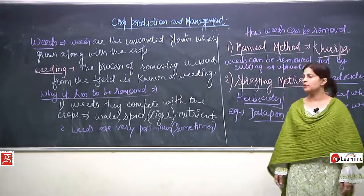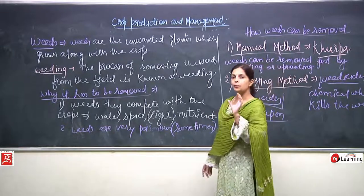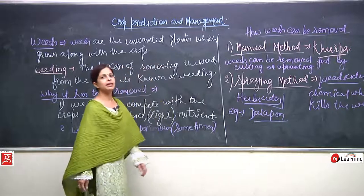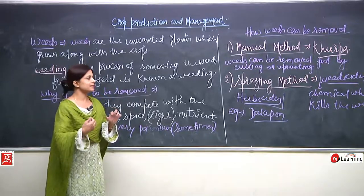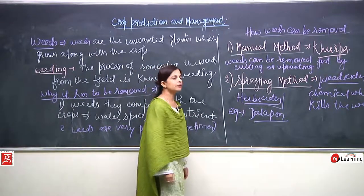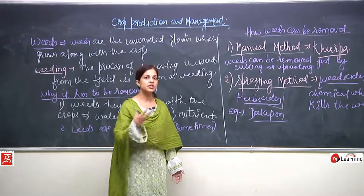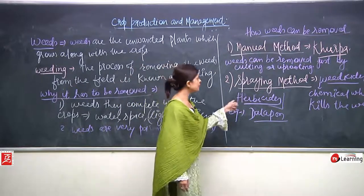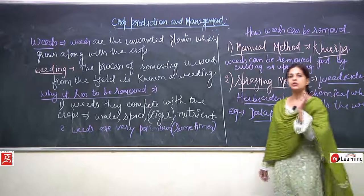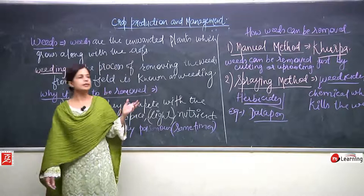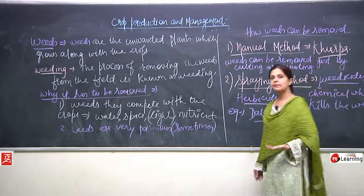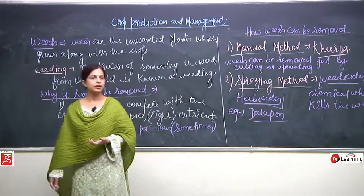Weeds are unwanted plants which grow along with the crops and must be removed because they compete with the crops for water and nutrients, adversely affecting crop growth. Weeding is the process of removing the weeds. It can be done in two ways: manual method using khurpa by cutting or uprooting, and spraying method using weedicides. Farmers must take precautions while spraying as weedicides are harmful to humans but not to crops.